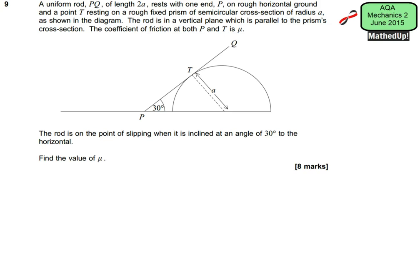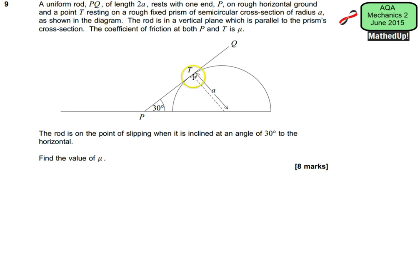This is question 9 from the AQA Mechanics 2 June 2015 exam paper. We have a uniform rod PQ of length 2a that rests with one end P on rough horizontal ground, and at point T resting on a rough fixed prism of semicircular cross-section which has a radius of a.